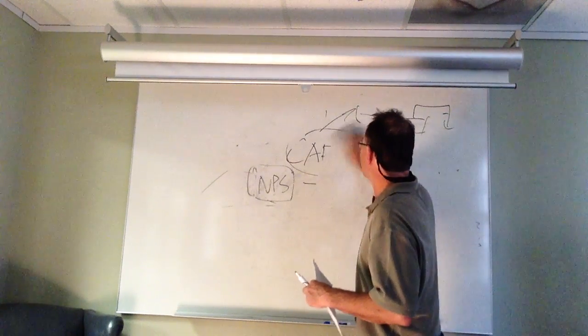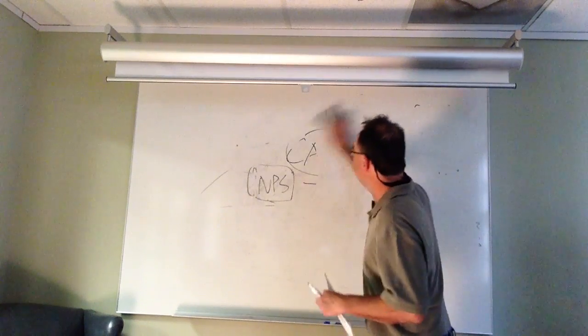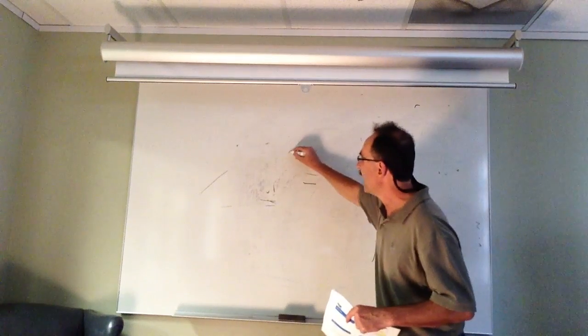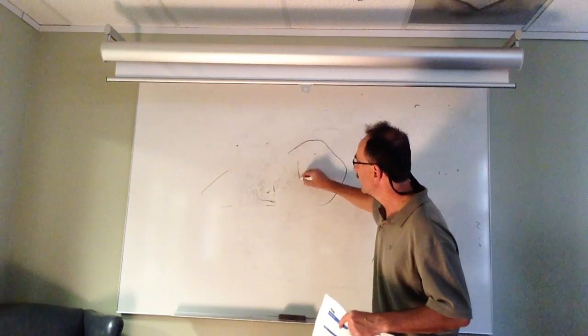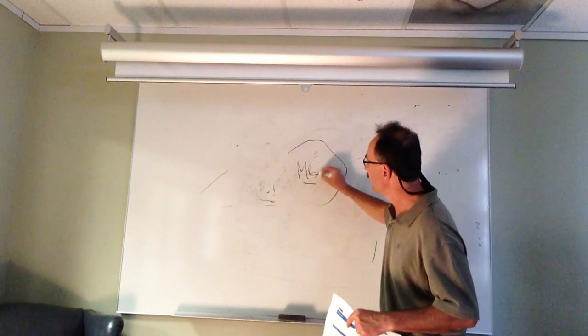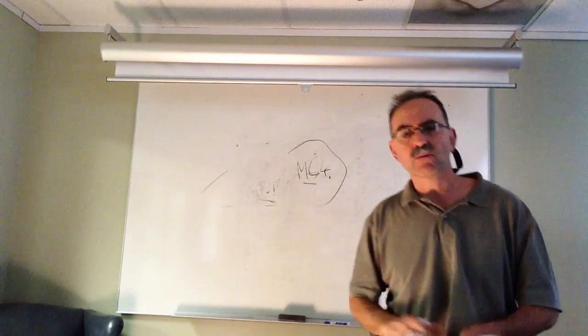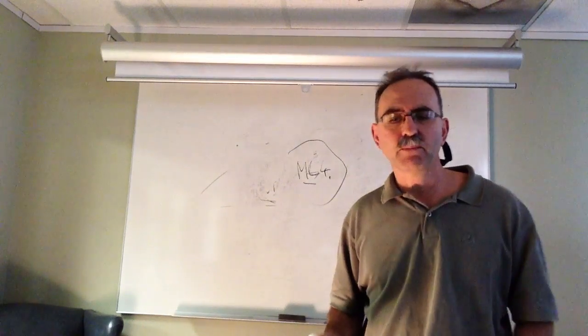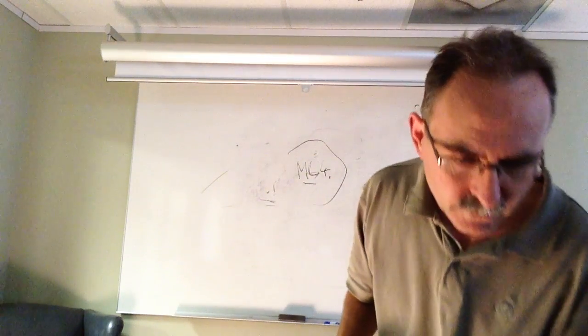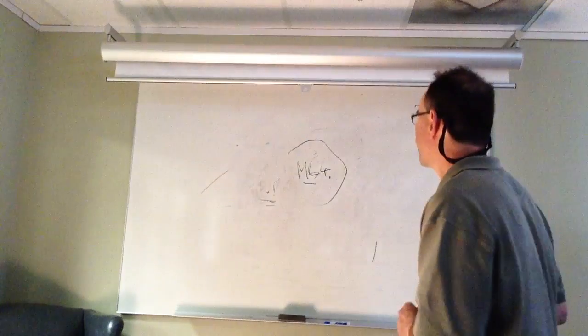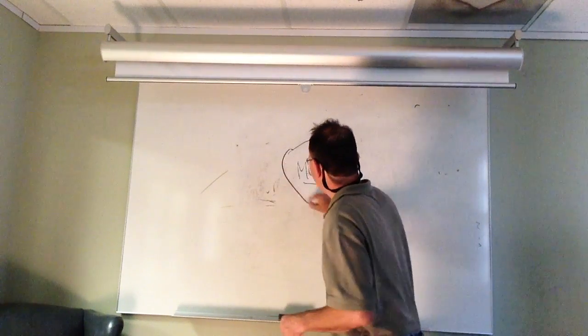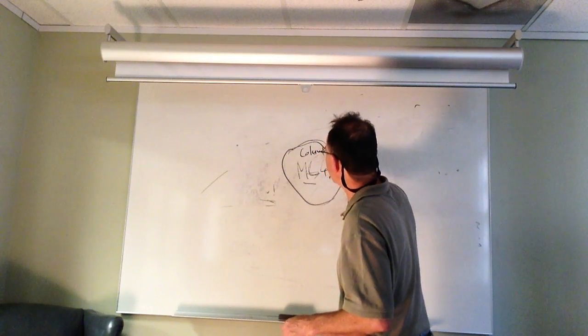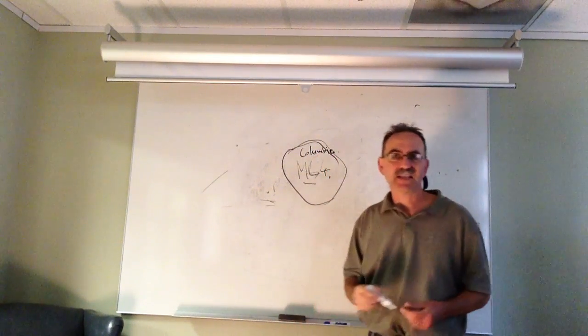The other thing was the MS4—municipal separate storm sewer system—and they were taking cities and counties. Let's suppose this is Columbia. Columbia is designated as MS4.